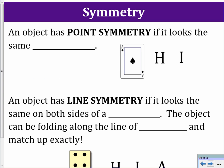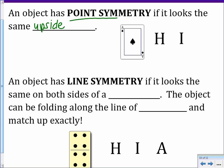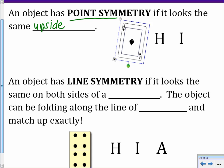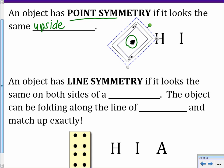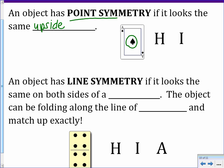Two other concepts are types of symmetry. An object has point symmetry if it looks the same upside down — you simply rotate the object 180 degrees. For example, the letter H and the letter I both have point symmetry. An ace of spades might seem like it has point symmetry, but the spade in the middle looks different when flipped, so it actually does not.